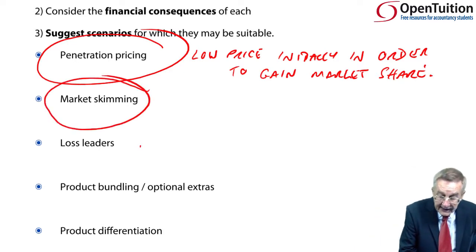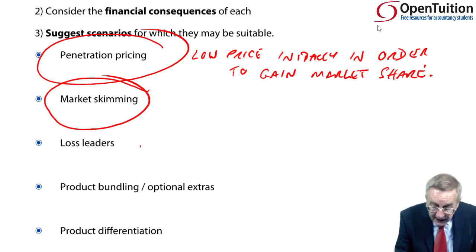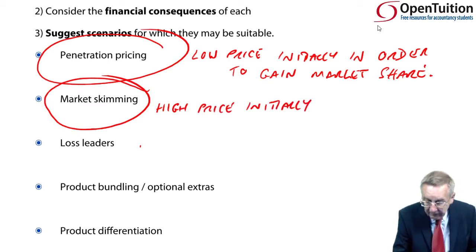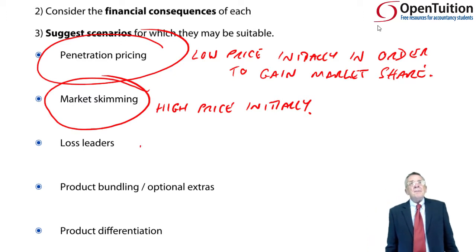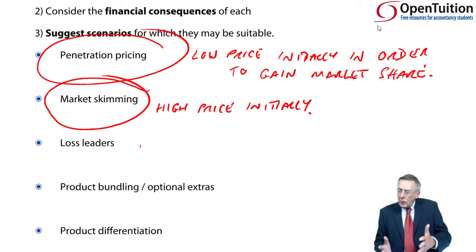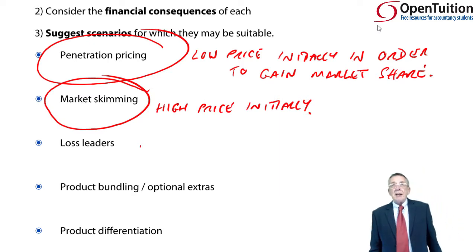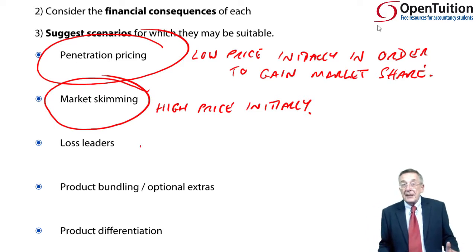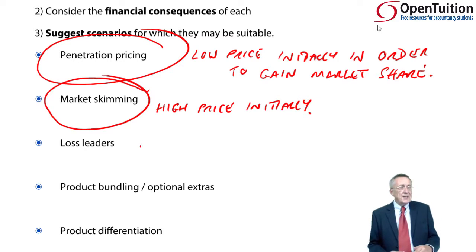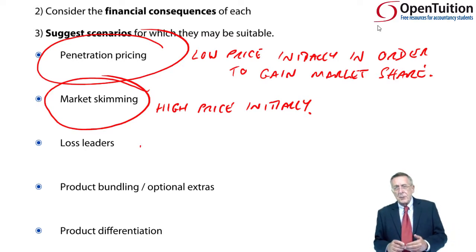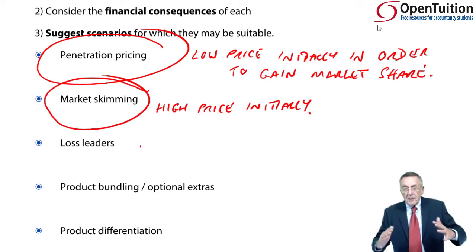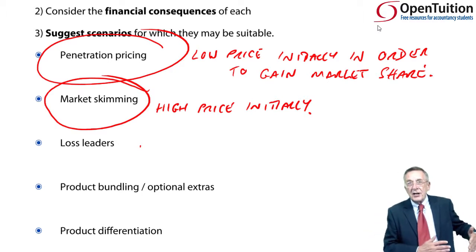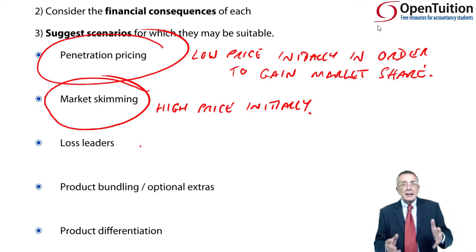The next one is market skimming. Initially this might sound a bit odd, but it's a high price initially, with the intention of reducing over time. Let me give you an example: flat screen TVs. When flat screen TVs first went on the market, they were incredibly expensive — I remember seeing some at £10,000 or £20,000. Very few people could afford them. But there are always some rich people who like to be the first to have new technology, so there are always some people who will pay a high price, though obviously a limited number.